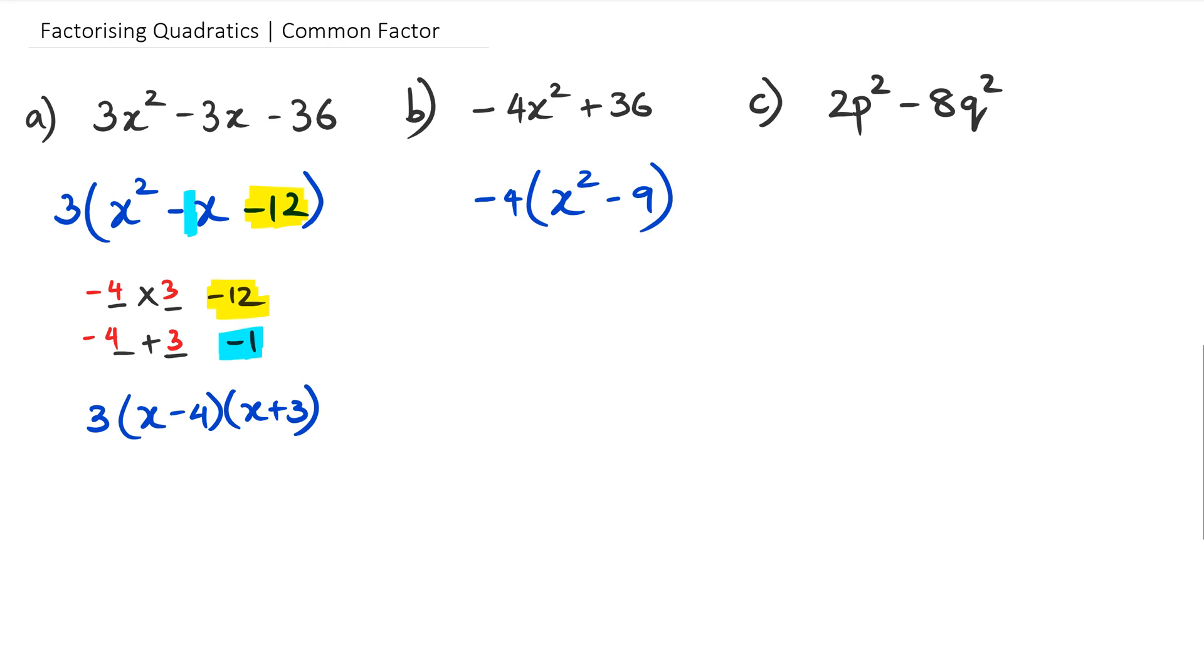Now looking at x squared minus 9, we know it's difference of two squares. That means one of the brackets will be minus 3 and the other one will be positive 3. So we can factorize this as negative 4 multiplied by x minus 3 and x plus 3.